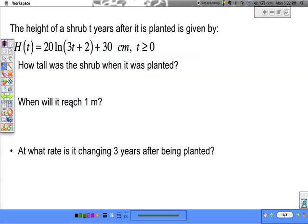Now we have a formula for the height of a shrub. We have this particular shrub, and it grows according to this logarithmic equation. t stands for how many years after it's planted. The first question is, how tall was the shrub when it was planted?